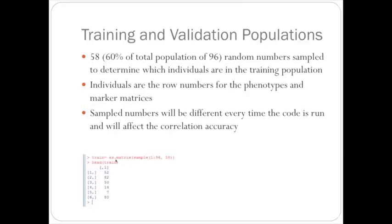I create a vector of these random numbers. It's sample 1 to 196, since those are the numbers that we need to sample in between. Then we sample 58 of those numbers to get the training population.